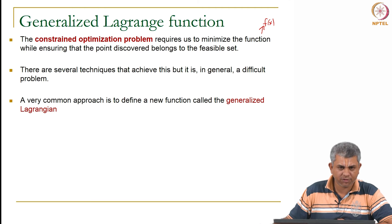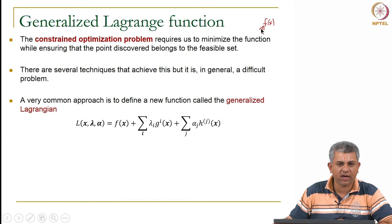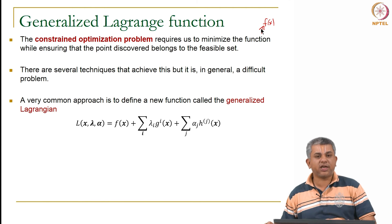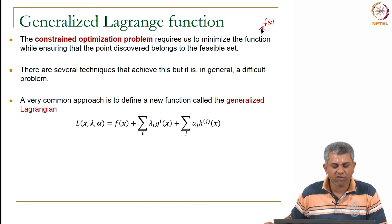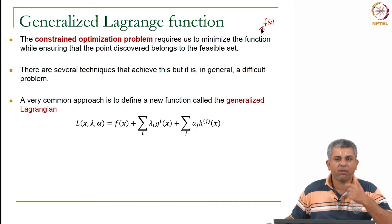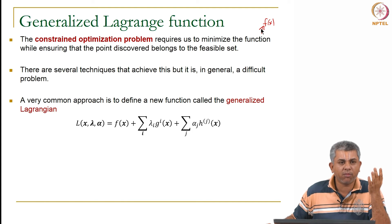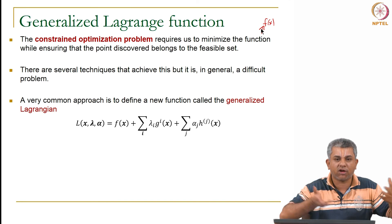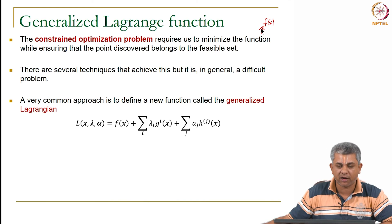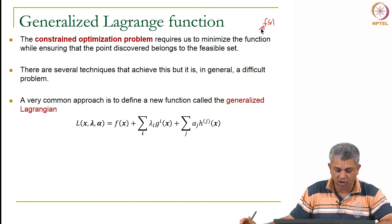This is in general a difficult problem. A very common approach for this is what is called the generalized Lagrangian. This employs a standard trick in a lot of mathematics. Suppose you are finding a problem which is difficult to solve. You can actually simplify the problem by adding extra variables. This is similar to in geometry you made some extra constructions in order to make proofs. You add a few things which are not there.